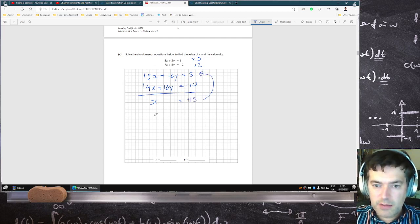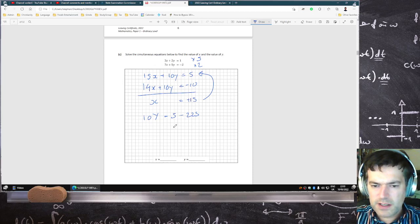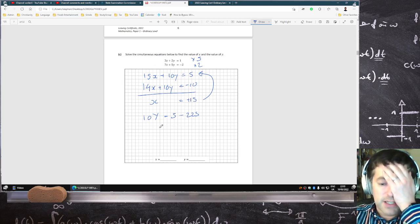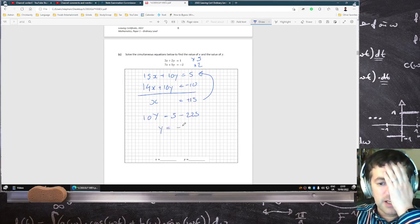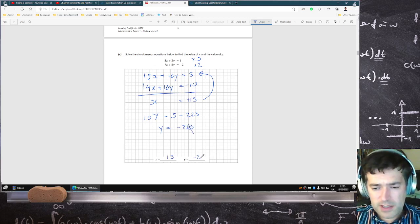Sub that back in to get the y. So 10y would equal 5 minus 15x, which is 2 to 5. So what's that now? Y equals minus 2, 20 over 10. So minus 22. So x is 15 and y is minus 22.